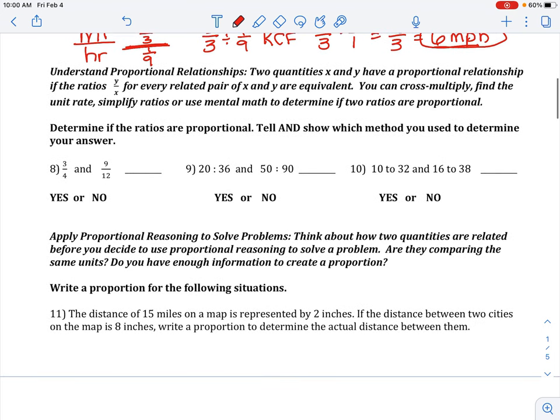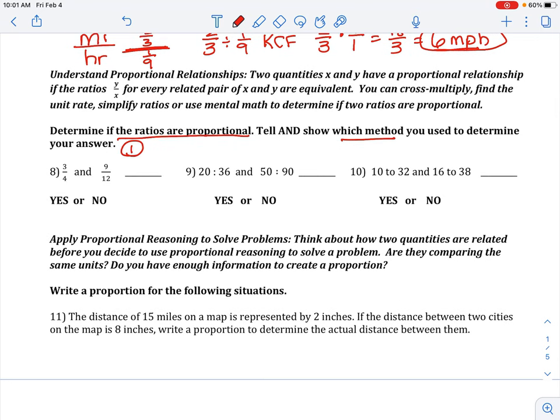For the next part, we are determining if the ratios are proportional. Tell and show which method you use to determine your answer. Remember, we have three methods. One is to simplify the ratio. Number two, you can cross-multiply. Or, you could use the third method, which is divide to find the unit rate.